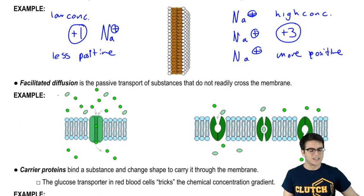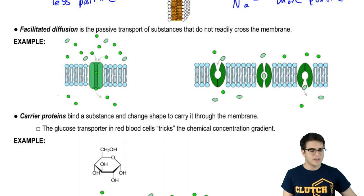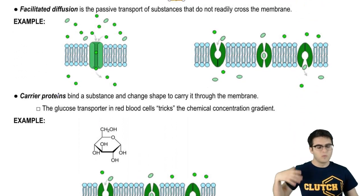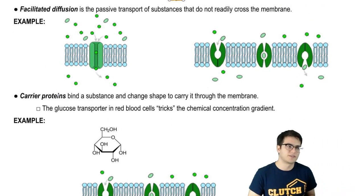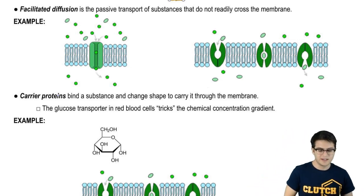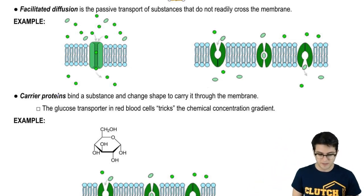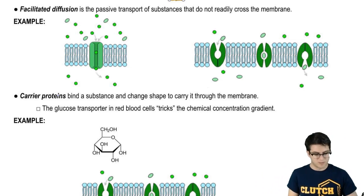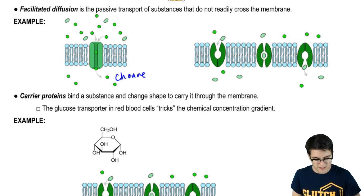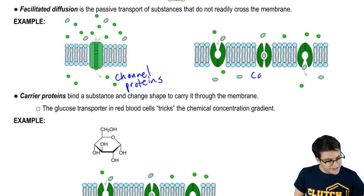Now, facilitated diffusion is when those substances wouldn't readily go across the membrane. They need a little help. They need some facilitation, and the facilitation comes in the form of transport proteins. We've already seen the transport proteins before, and our two types are channel proteins and carrier proteins.